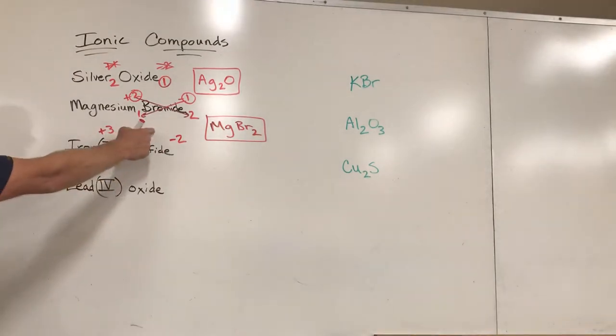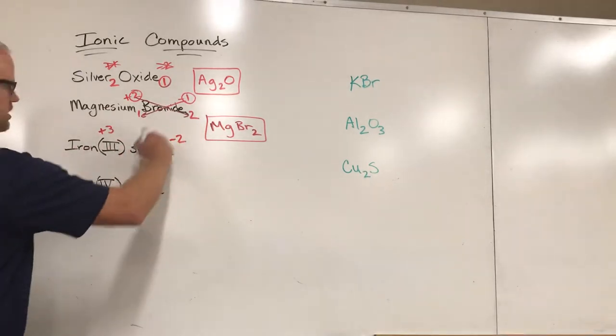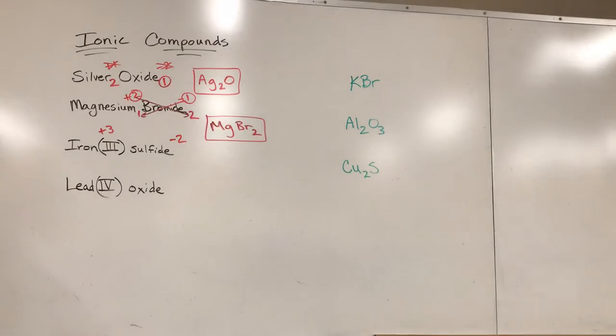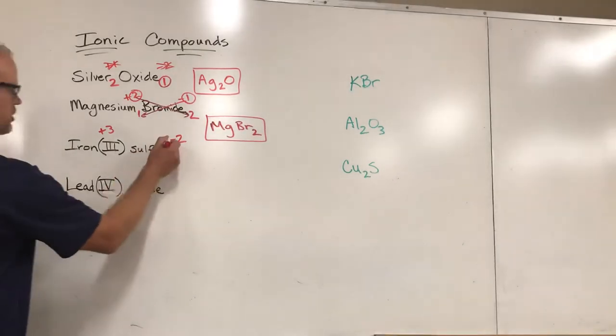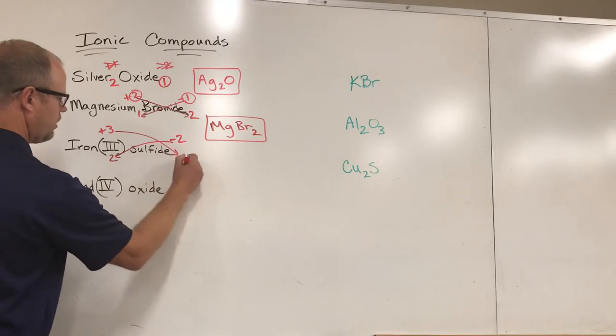We look up sulfide and sulfide is a minus two. Now those don't make zero. What we really need is the total of the iron atoms - iron ions - to be positive six, and the total of the sulfides to be negative six. Two and three both go into six, but the quick and easy way to do this is just to say we need two of these and three of those.